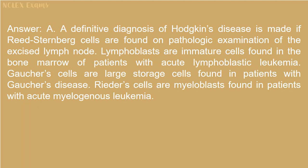Answer: A. A definitive diagnosis of Hodgkin's disease is made if Reed-Sternberg cells are found on pathologic examination of the excised lymph node. Lymphoblasts are immature cells found in the bone marrow of patients with acute lymphoblastic leukemia. Gaucher cells are large storage cells found in patients with Gaucher's disease. Auer rods are myeloblasts found in patients with acute myelogenous leukemia.